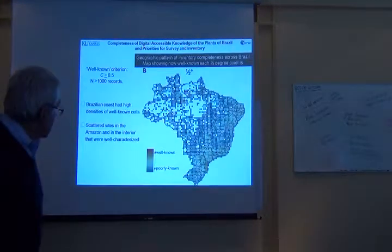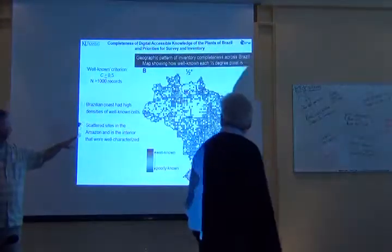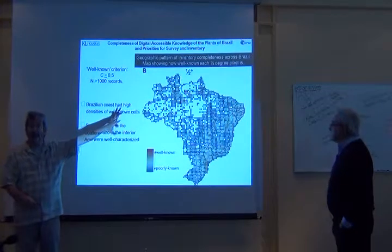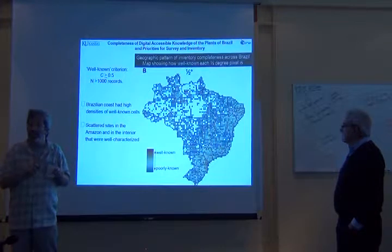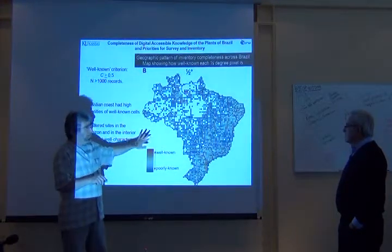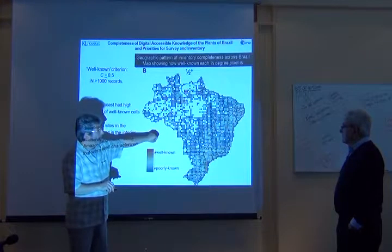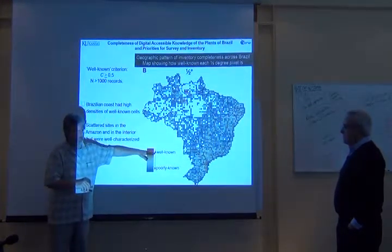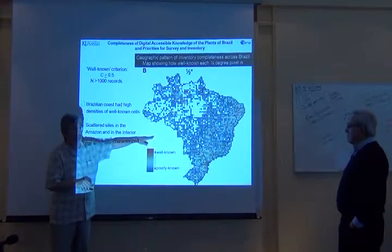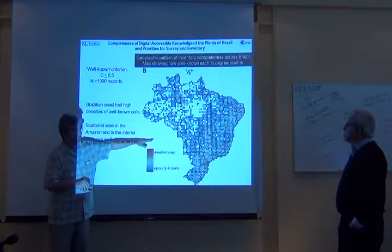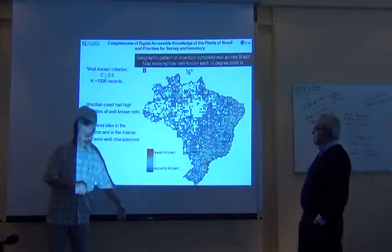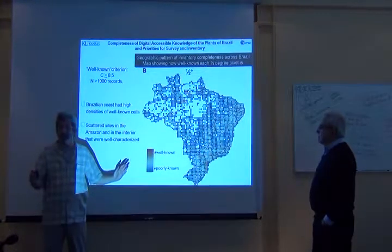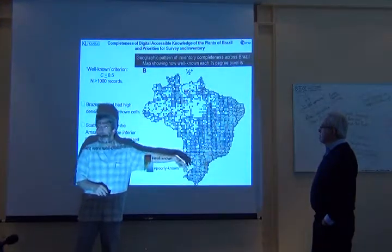In this last slide, this is the general picture of how well known these pixels are, which was an intermediate resolution. What we did at this point was we picked some threshold and said anything better known than this we're going to consider well characterized, and anything below that we're going to consider uncharacterized. So essentially, we took this map and made it binary.